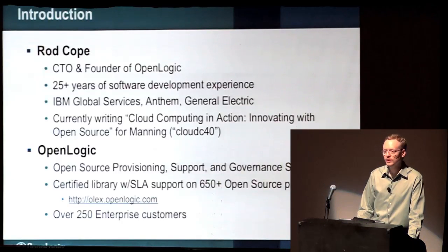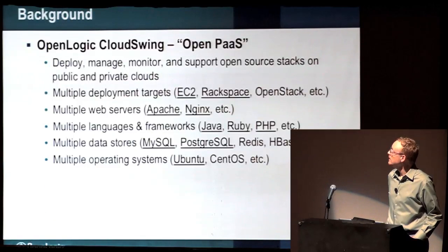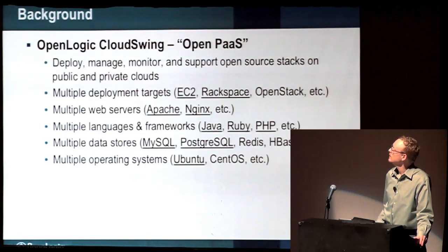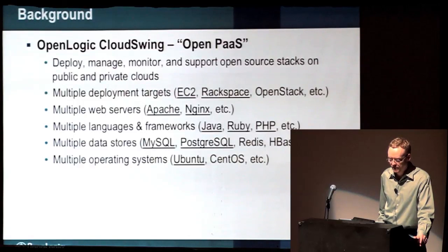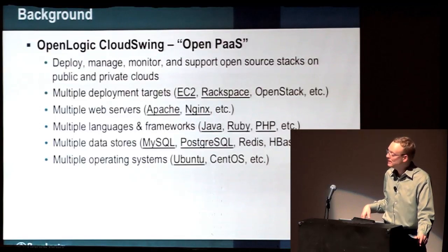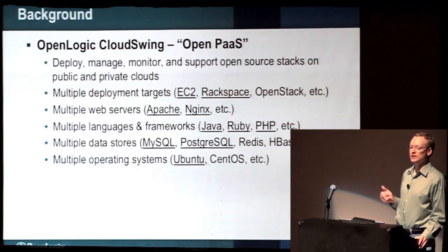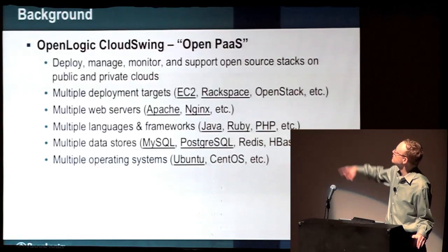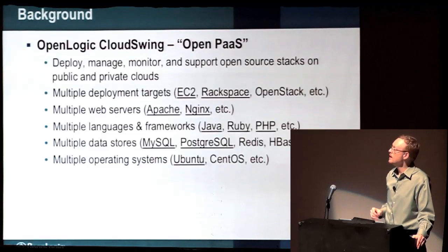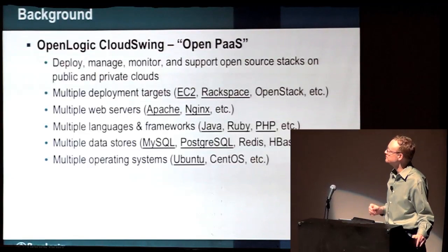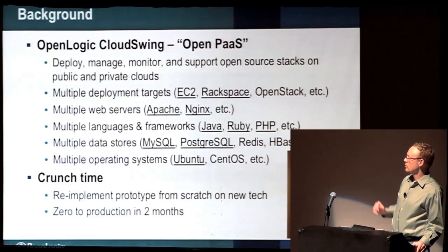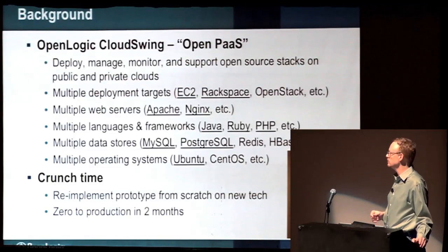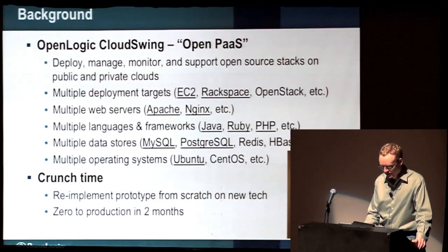We have a couple hundred enterprise customers today. The background: why we needed all this stuff. We decided to create a new product a couple years ago in the cloud. We call it OpenLogic Cloud Swing — it just came out in beta last month with beta 2 going out this coming Monday. It's an open PaaS to get people up and running quickly in a cloud of their choice with the stack of their choice. We had to build that very quickly — zero to production in two months on all those technologies we hadn't used yet.